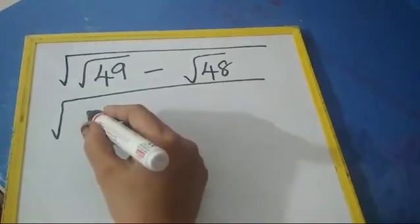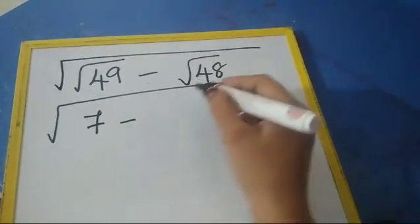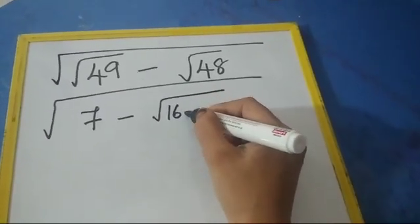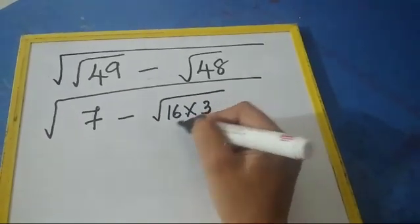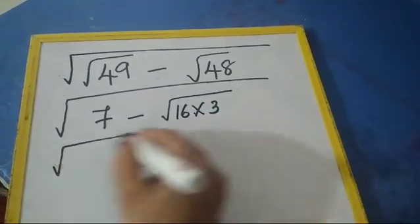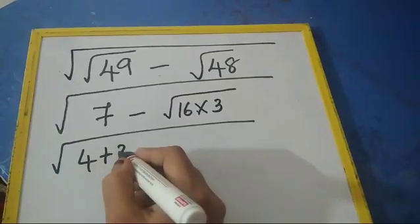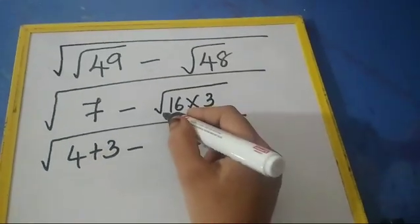of 49, which is 7, minus √48 we will write as √(16×3). Then this 7 we will write as 4+3 minus, square root of 16 is